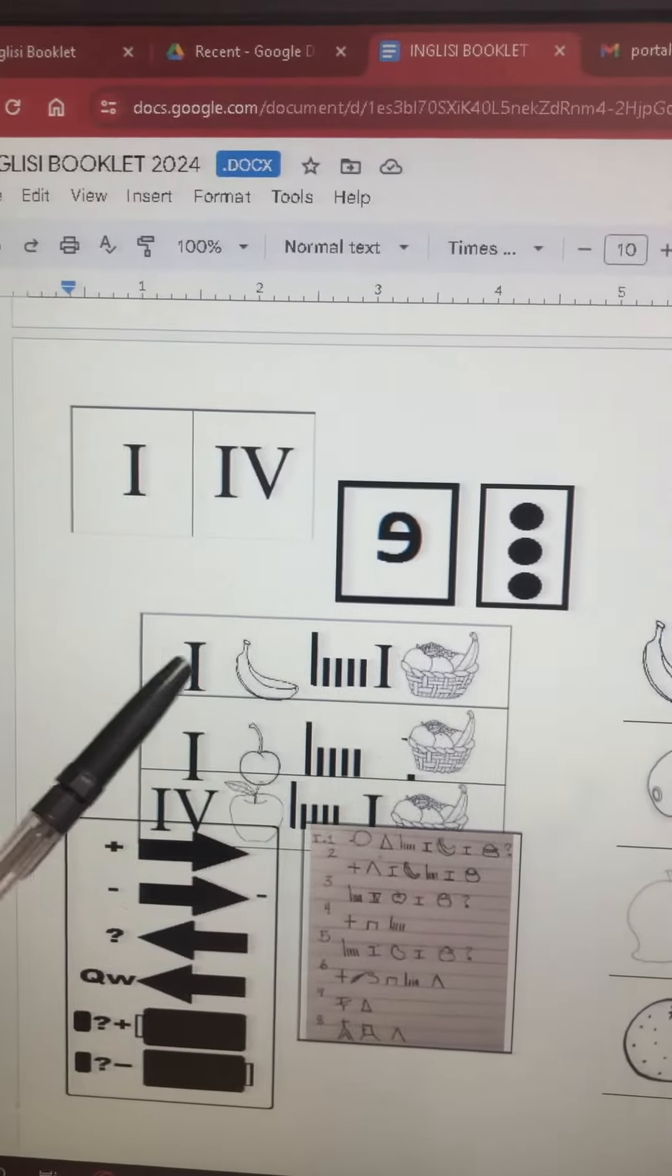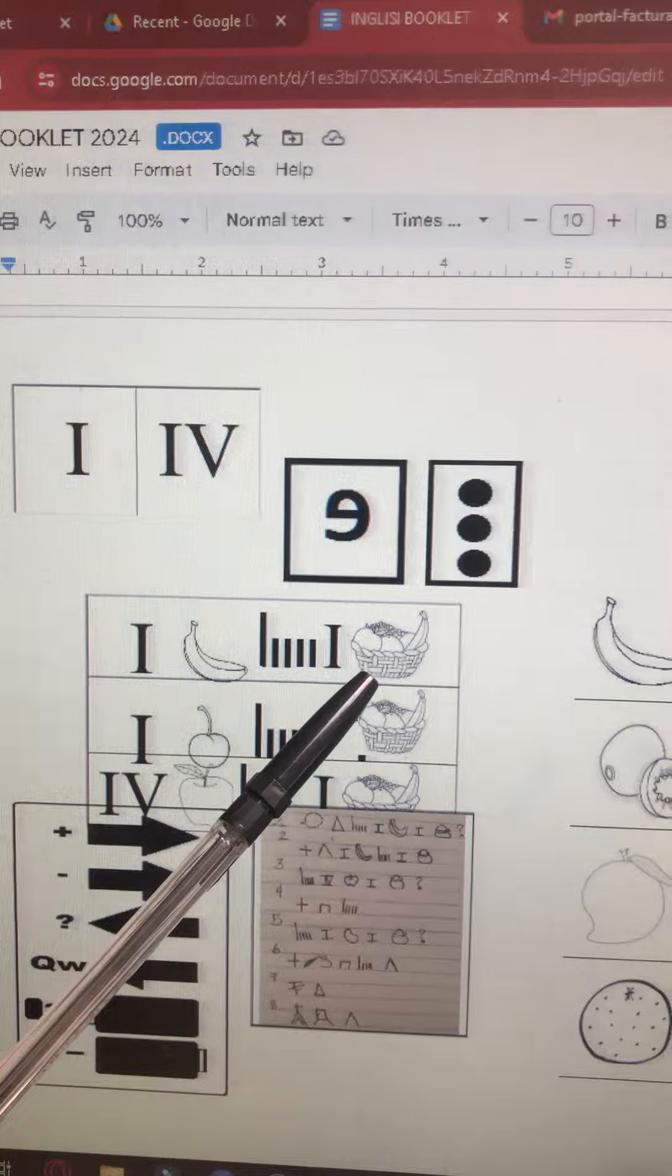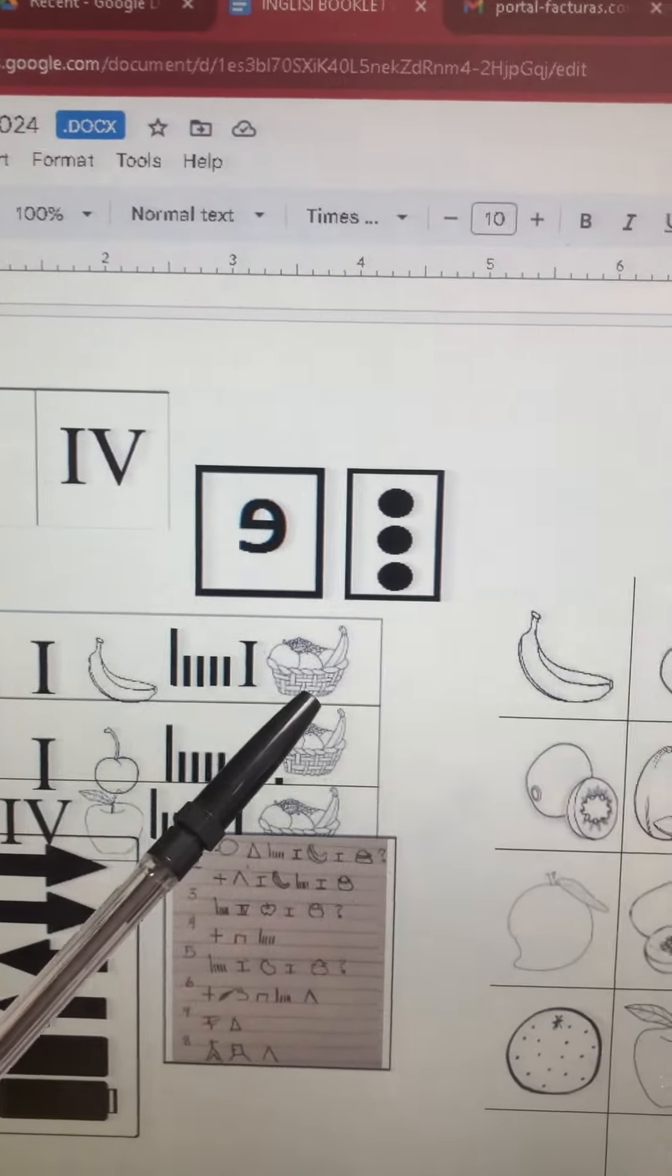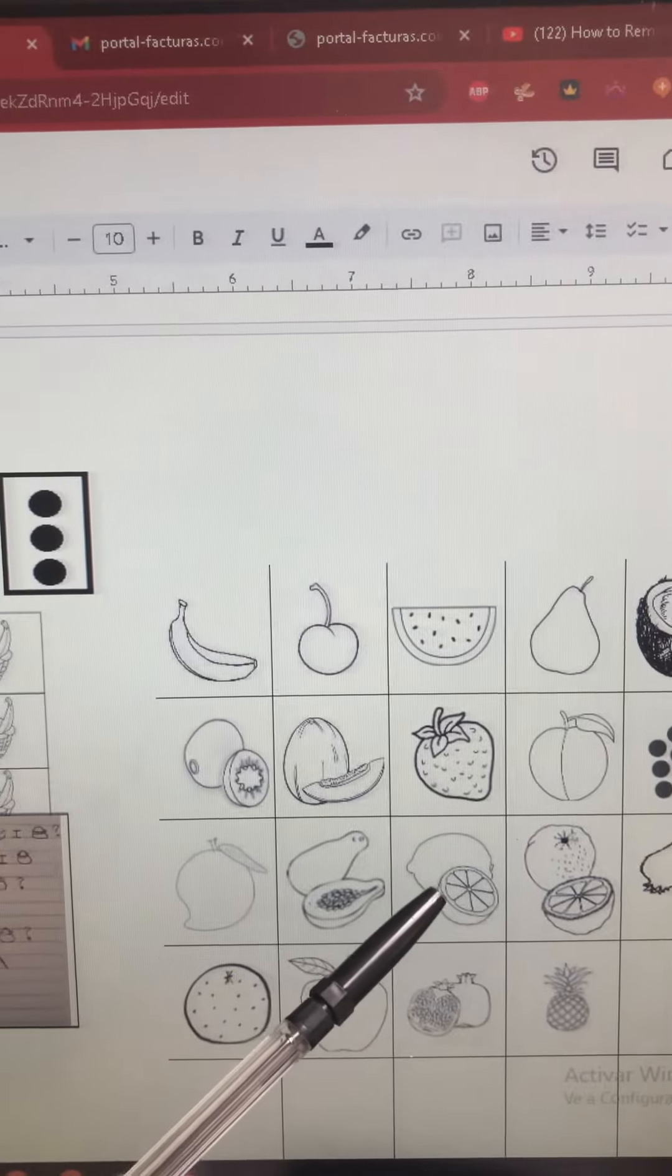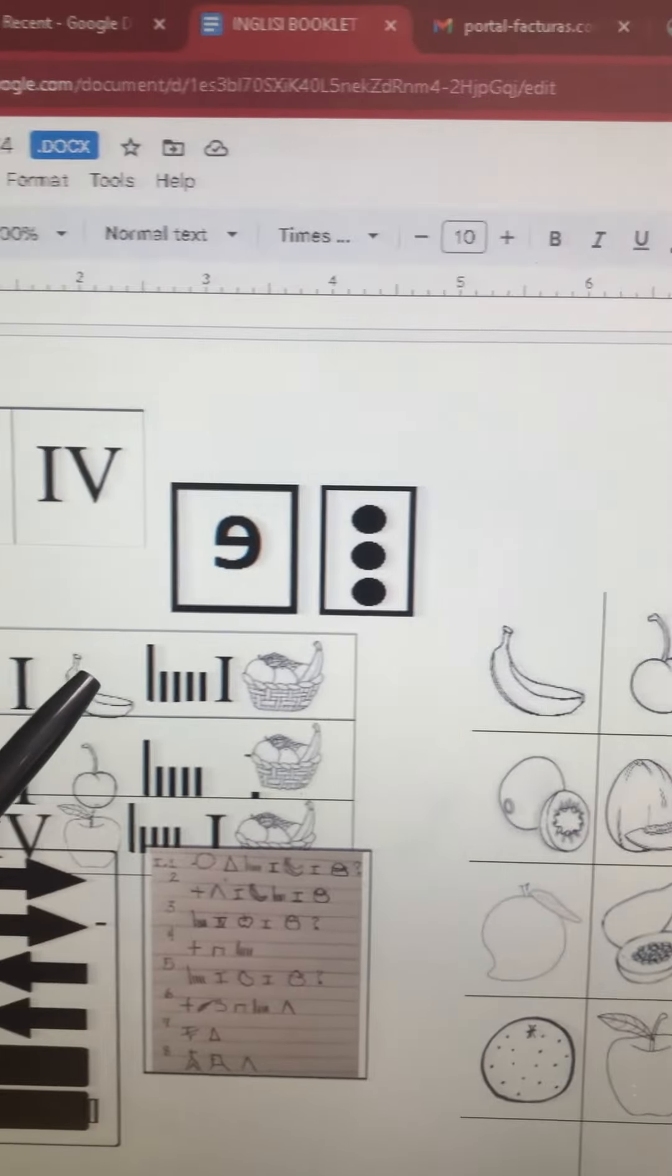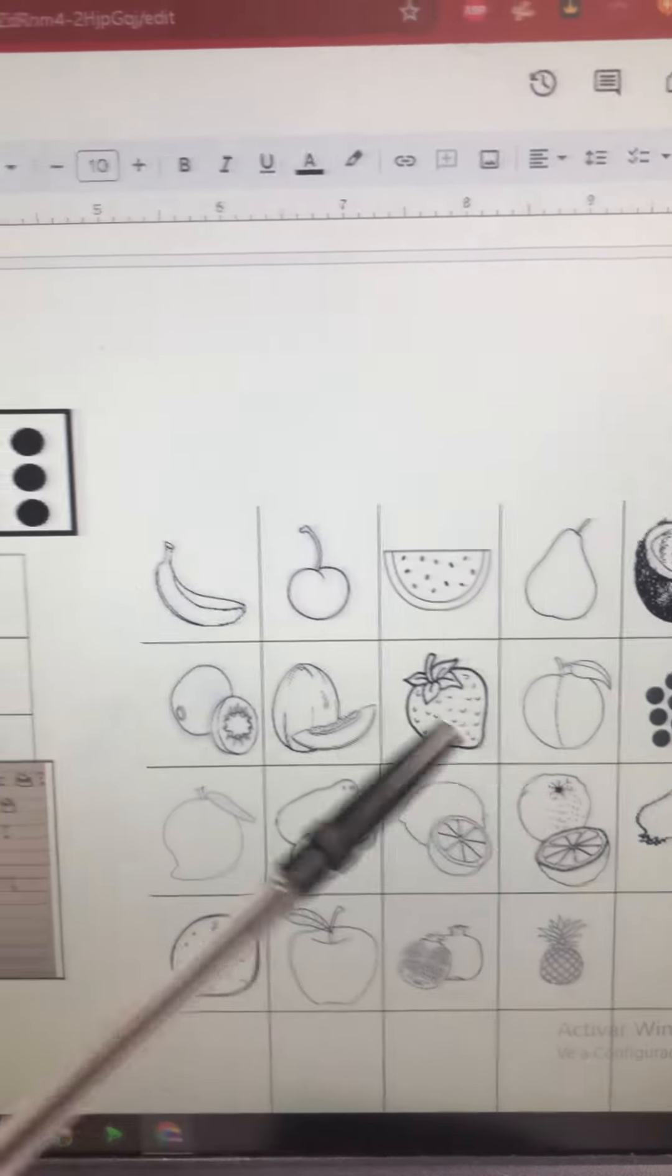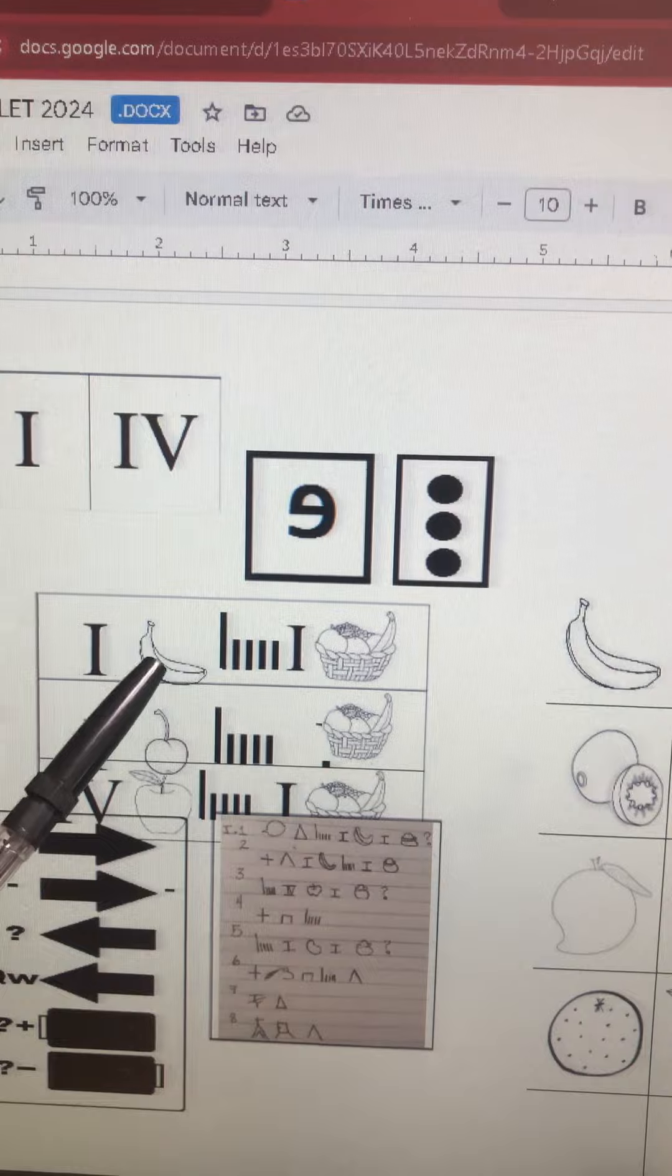Uva: una uva es una fruta. Mango: un mango es una fruta. Papaya: una papaya es una fruta. Limón: un limón es una fruta. Naranja: una naranja es una fruta.